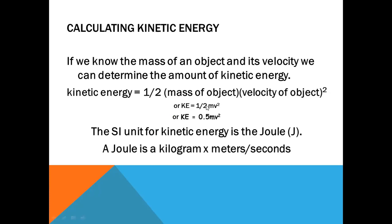We already know m is for the mass of the object and v is the velocity. Don't forget this — your teacher will always ask you to write the unit. The SI unit for energy is the Joule, capital J. A Joule is kilograms times meters squared per second squared.